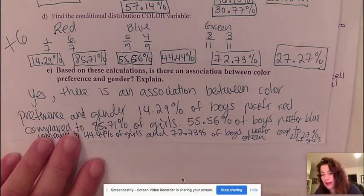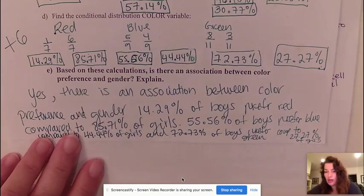So that is just one example how you can answer the question of is there an association between the colors. So again, you always want to state the problem in context and you want to use statistics to back it up.